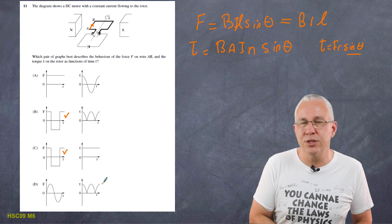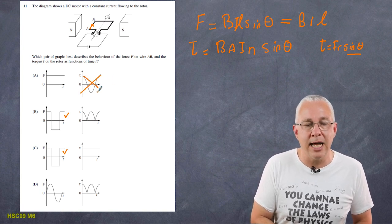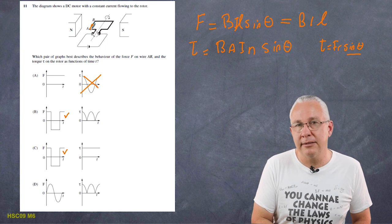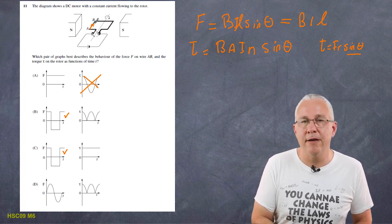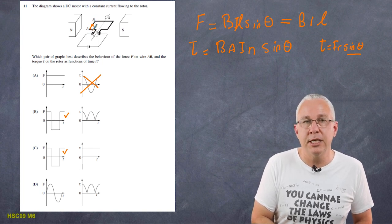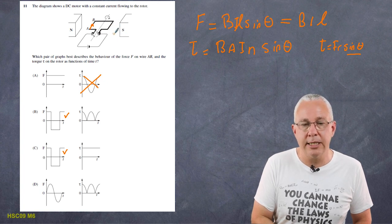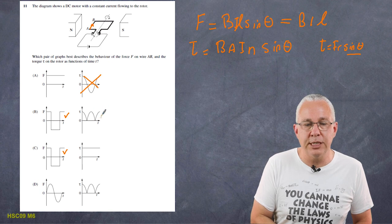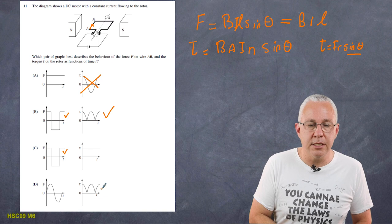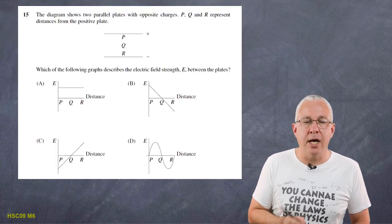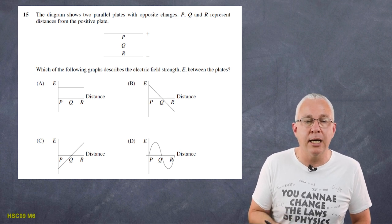We can discount A automatically. For the torque: in the starting position the force is perpendicular to the radius, giving maximum torque. As it rotates to 90 degrees, torque decreases to zero, then increases again — producing a sinusoidal pattern. This is shown correctly in both B and C's torque graphs, but considering both the force and torque behavior together, only option B satisfies both conditions. The answer is B.